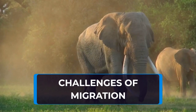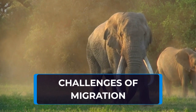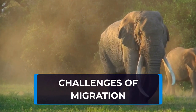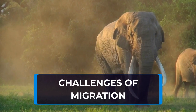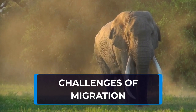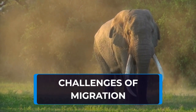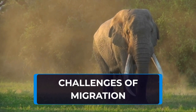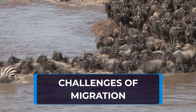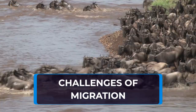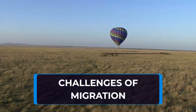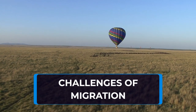Migration is a crucial aspect of many animals' lives, but it can also be a risky and challenging journey. One of the biggest obstacles animals face during migration is human development. As humans continue to expand into natural habitats, it can disrupt migration routes and cause animals to change their behavior. For example, roads and highways can pose significant barriers to migration for animals, leading to increased roadkill and a disruption of population dynamics.